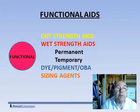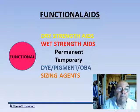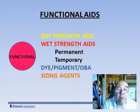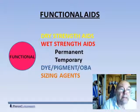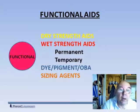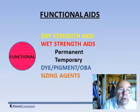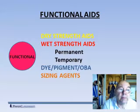When the machine is running, then we need functional aids and process aids. So what is a functional aid? A functional aid is there to give a property to the final sheet, and here are some examples.